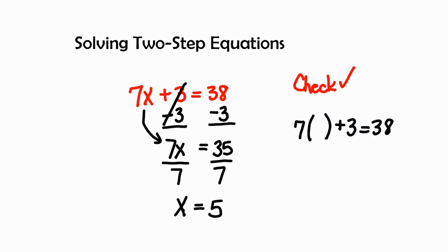When I plug in the 5, I see that 7 times 5 is 35, plus 3 equals 38. 35 plus 3 equals 38. Therefore I know that my solution is correct.